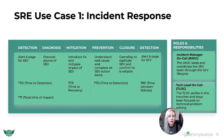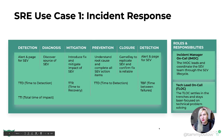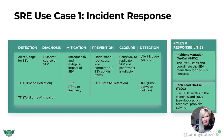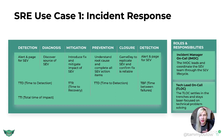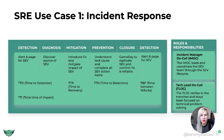SRE use case one: incident response. This is a common timeline for what might happen during incident response. We start at detection, then move to diagnosis, then mitigation, then prevention, then closure, then detection again. Under detection, we alert and page for the SEV — the high severity incident. We then discover the source of the SEV, which could have multiple things occurring, could be a cascading failure. We measure this as time to detection.